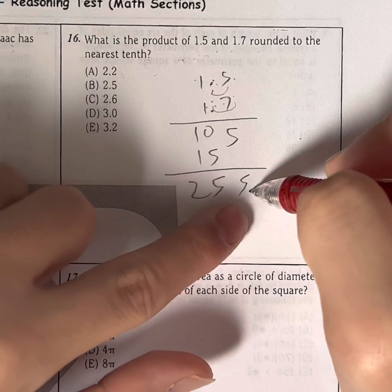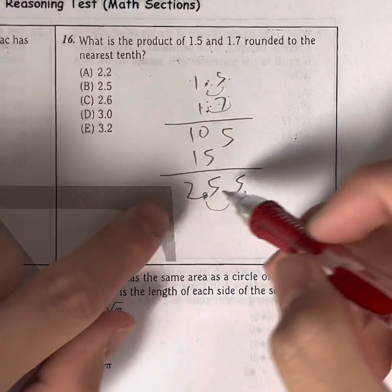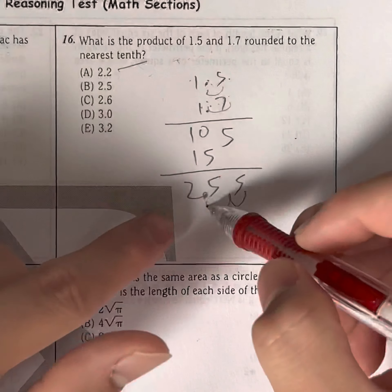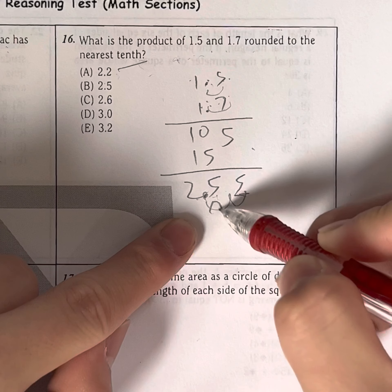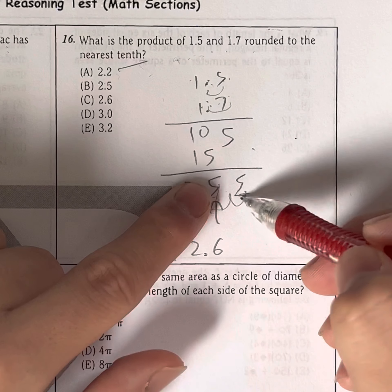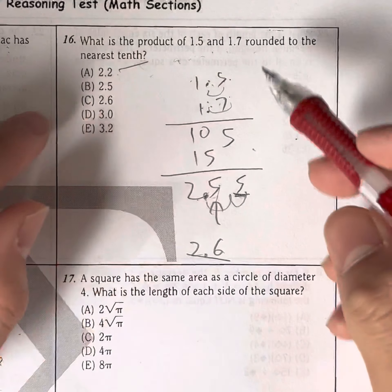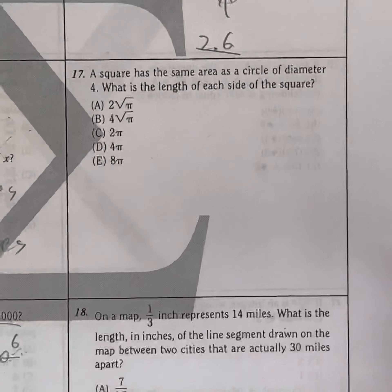And that's rounded to the nearest tenth. Well, 2.55, that's a 5. So we round up to the nearest tenth, which is this digit right here. It's going to be 2.6 because we're rounding up because it's a 5. Meaning the answer has to be C. So this one is just a little bit of routine work, but isn't too difficult.